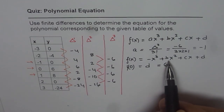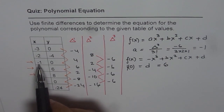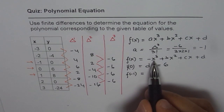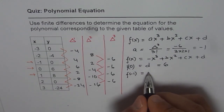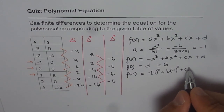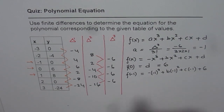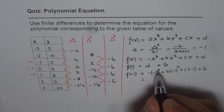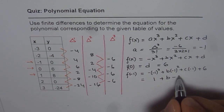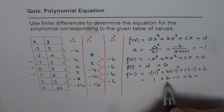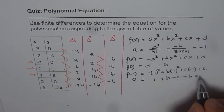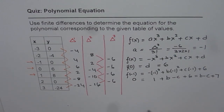Now we can place d equals 6 and find b and c. For f(minus 1), replacing x with minus 1 gives: minus of minus 1 cube plus b times minus 1 squared plus c times minus 1 plus 6, which simplifies to 1 plus b minus c plus 6. Setting this equal to f(minus 1) equals 0 gives us b minus c plus 7 equals 0.